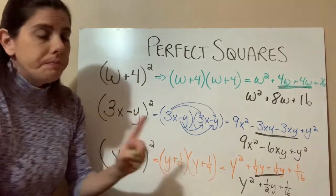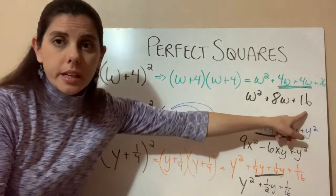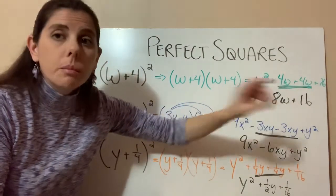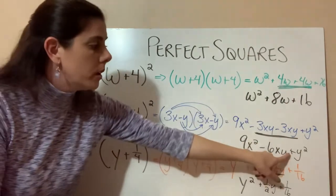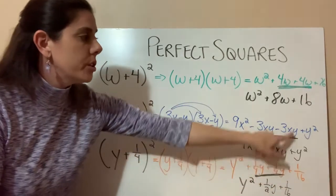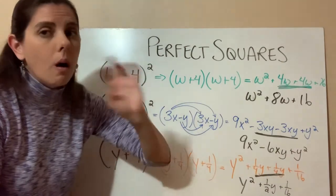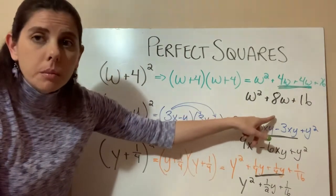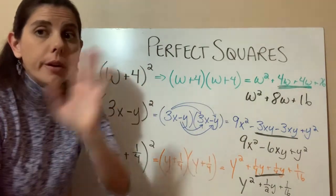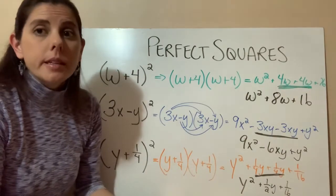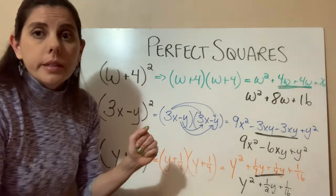So let's go through it again. The first term is going to be squared. And the last term is going to be squared. The last term, because it's squared, will always be positive. So if you look, all of these last terms are a plus 16, a plus 16th, a plus y squared. They're all positive. How we get the middle term? The middle term is going to be the coefficient. So if it's on the front or the back, it's going to be that plus itself or that times 2. So we'll do another video that gives another couple examples real quick.